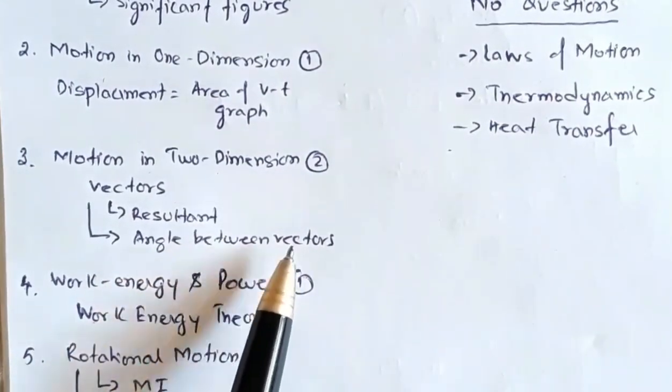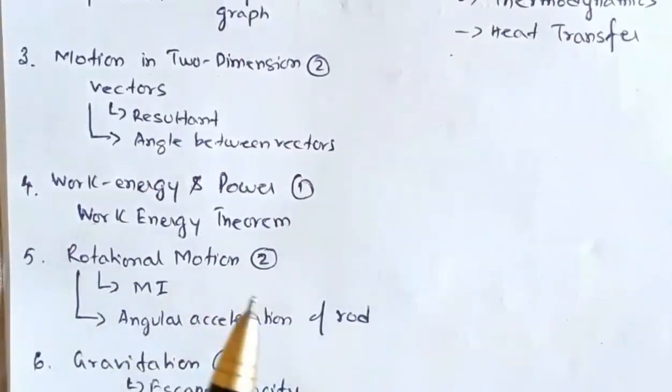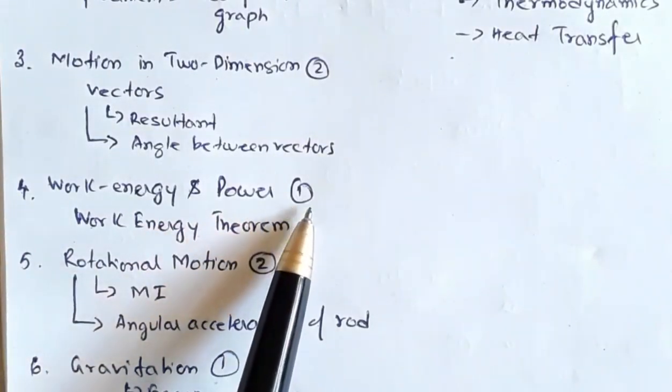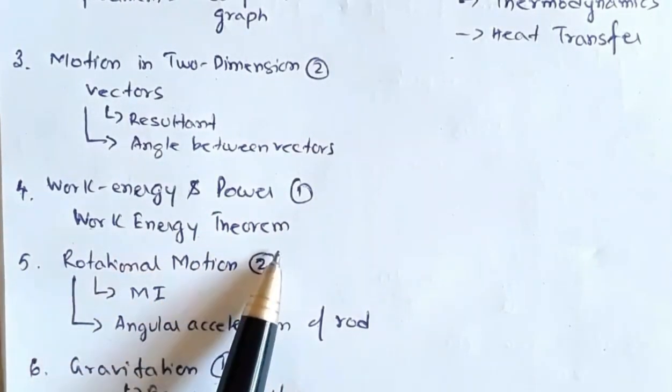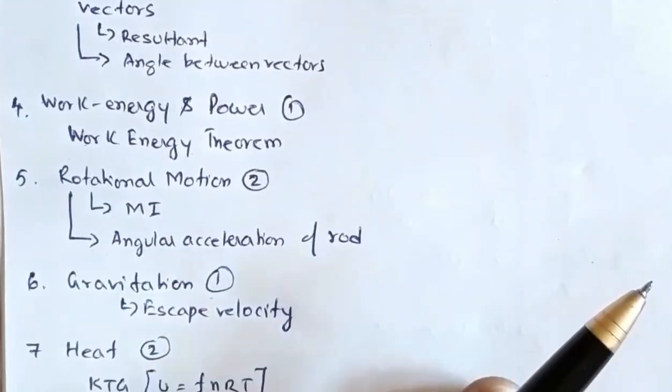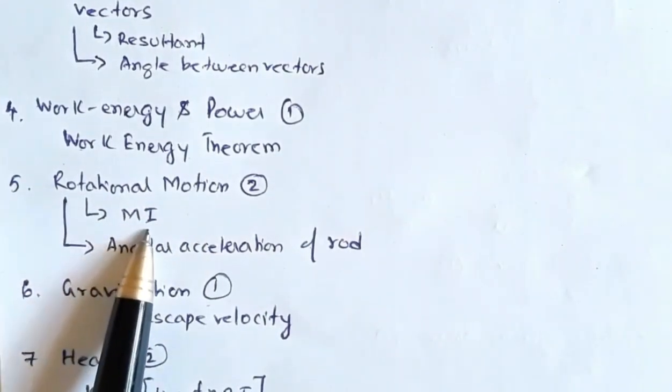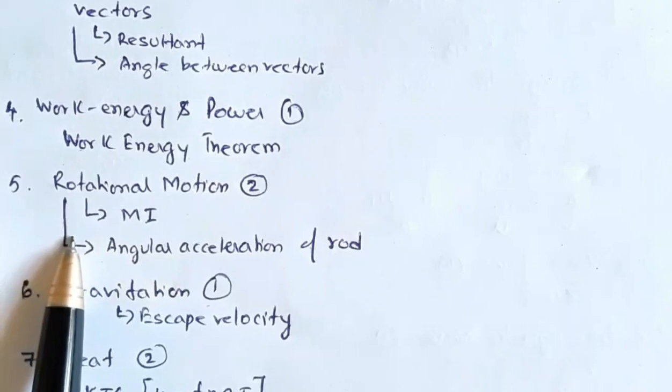From the chapter work energy power there was one question based on work energy theorem. From rotational motion there were two questions: one involving calculation of moment of inertia and one involving calculation of angular acceleration of rod.